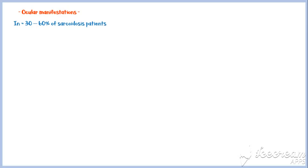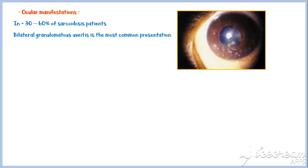About 30 to 60% of sarcoidosis patients develop ocular manifestations. Bilateral granulomatous uveitis is the most common presentation. In this image, you can see the intraocular granulomatous lesions seen in ocular sarcoidosis.